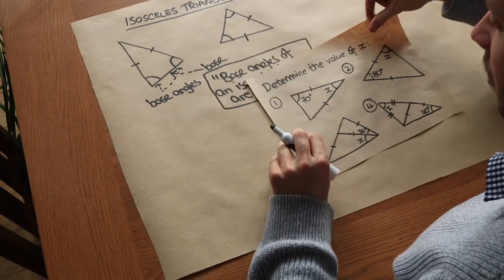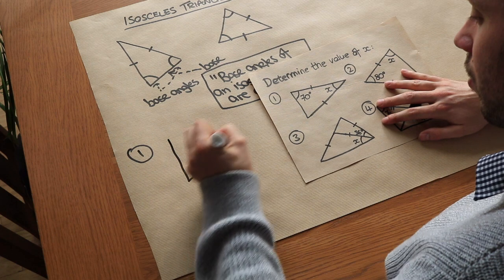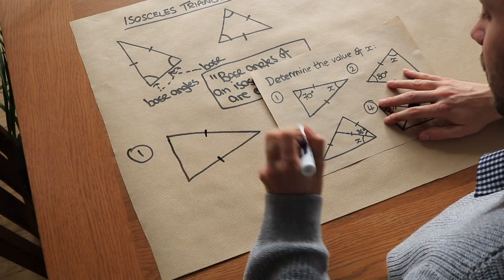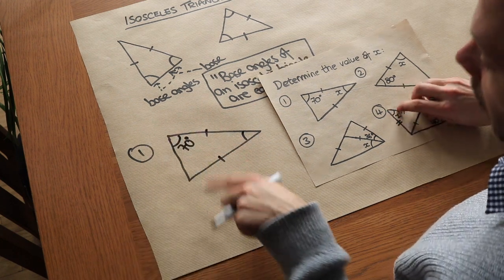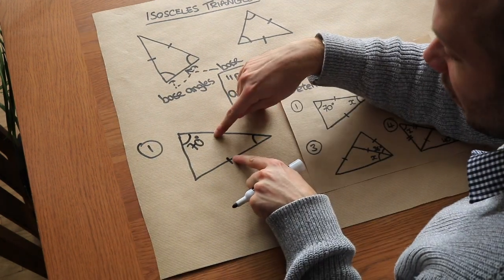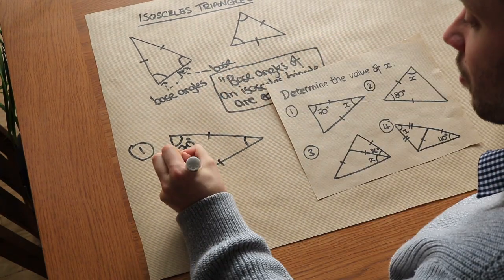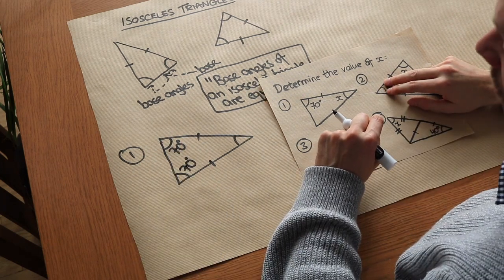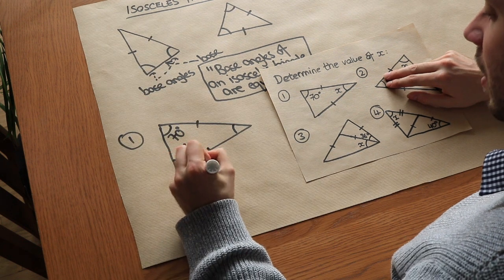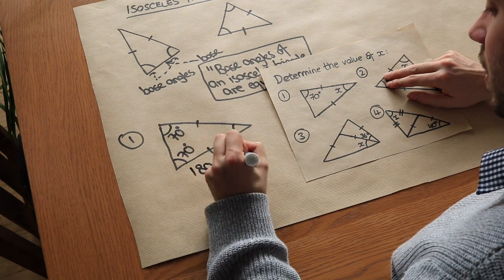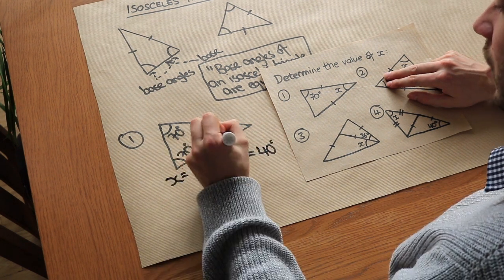Let's use that to solve some problems — we want to find the value of x in each case. For the first triangle, those two lengths are the same. That angle is x and this one is 70. If those two lengths are the same, the two base angles are equal, so that's also 70. The angles in a triangle sum to 180, so those two add up to 140, and 180 minus 140 is 40. Therefore x is equal to 40 degrees.